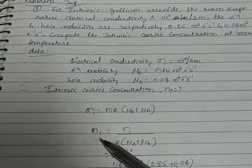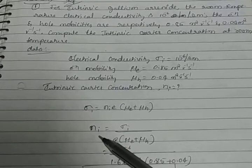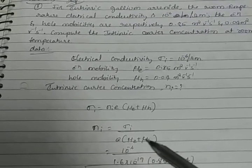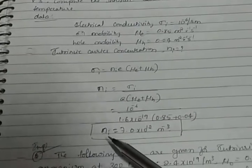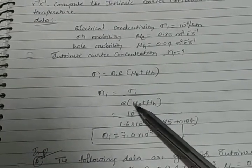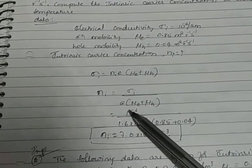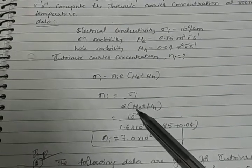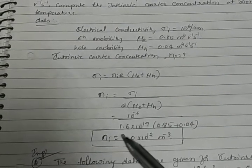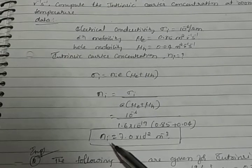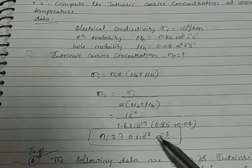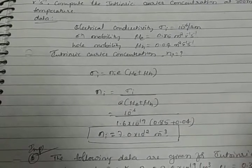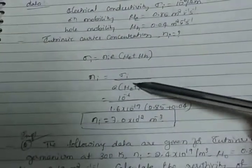Write this equation in terms of intrinsic carriers Ni. Put every value with respect to the above terms, then get simplification. You will get Ni value. Its unit is per meter cube.